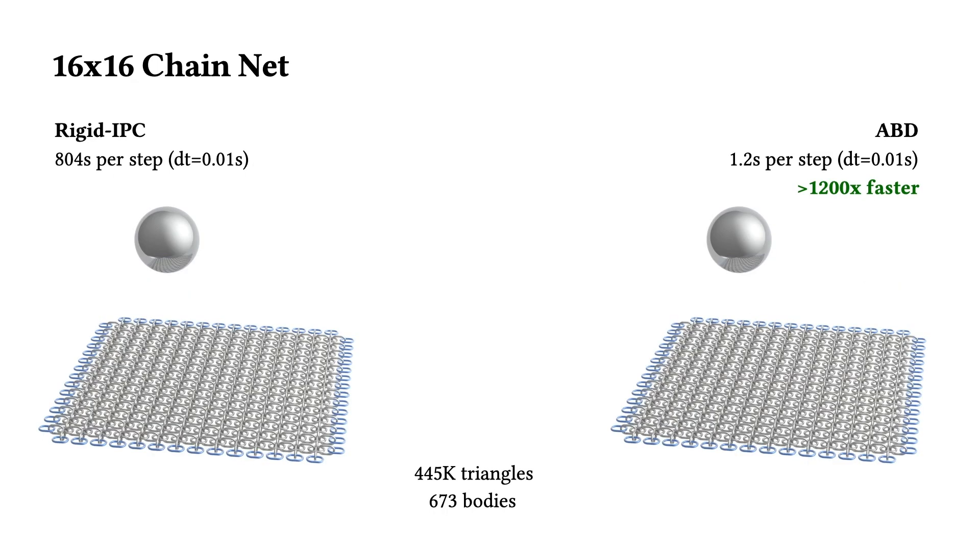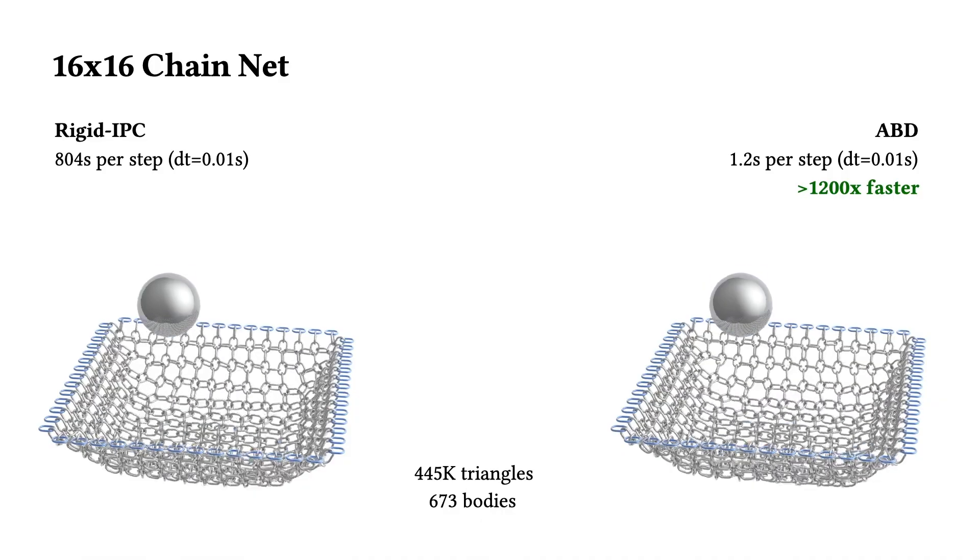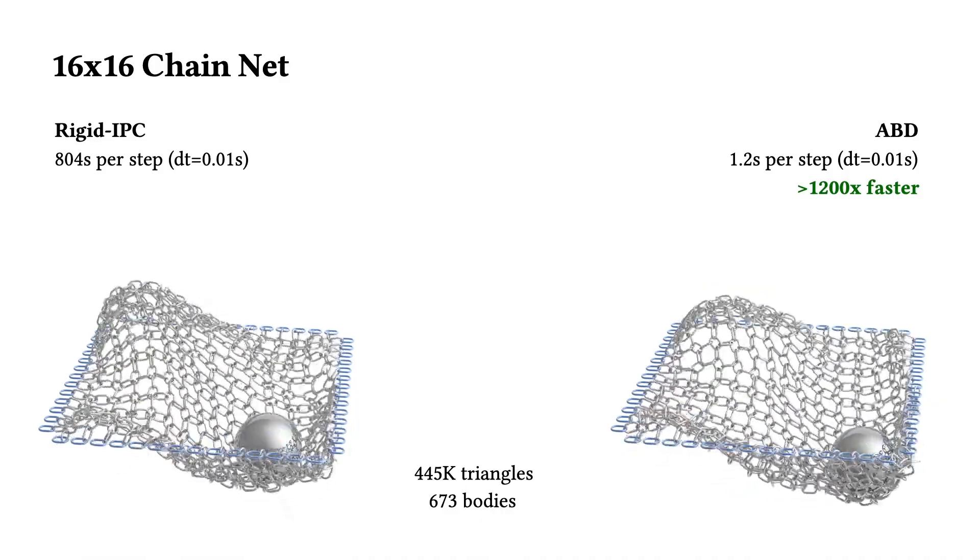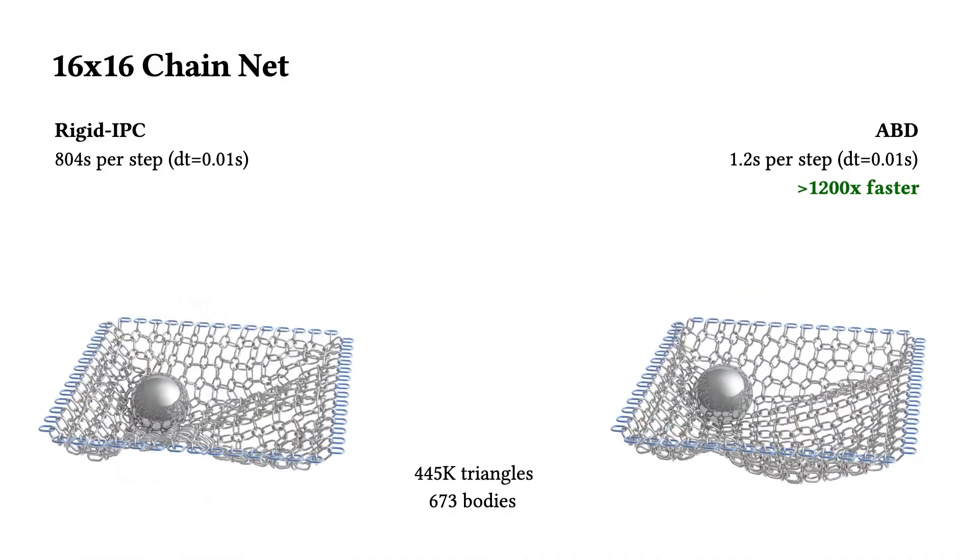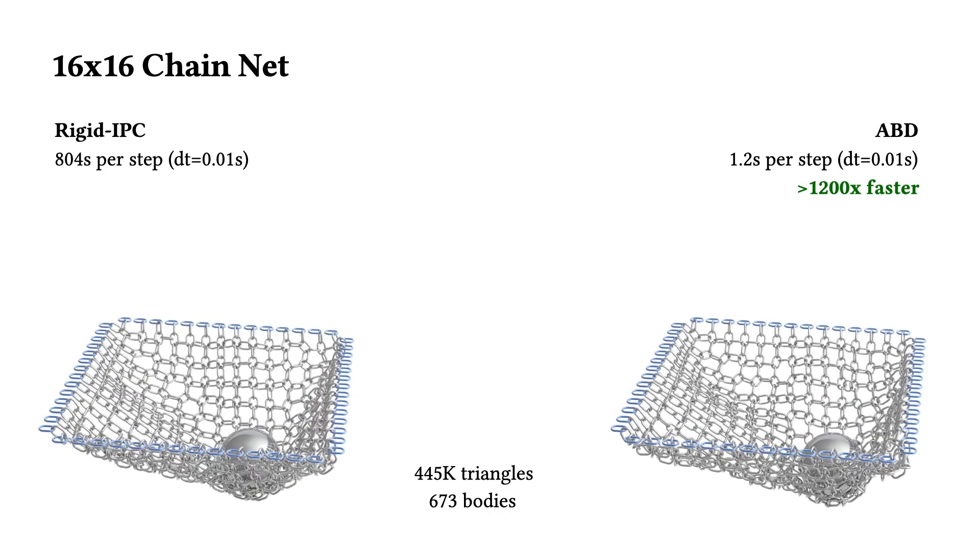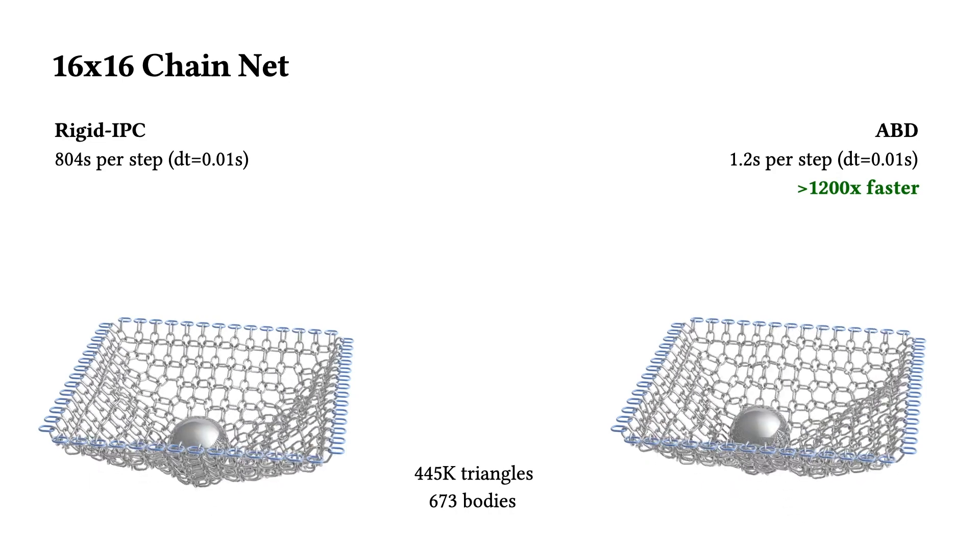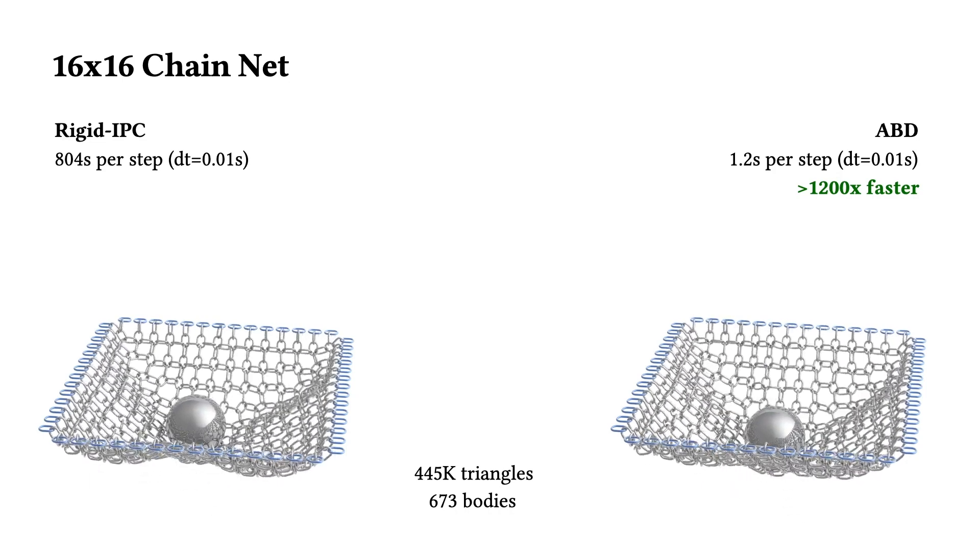Next, we increase the chain net to 16x16, and also further increase the simulation complexity by dropping a heavy falling sphere onto it. Here, ABD now outperforms rigidIPC by 600 times speed up while continuing to provide intersection-free trajectories.